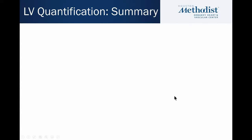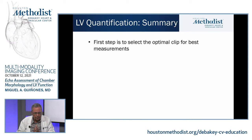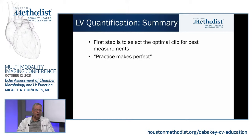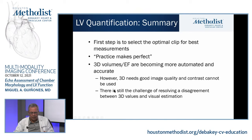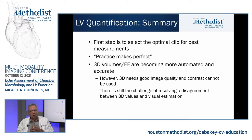In summary of quantification so far: the first step is to select the optimal clip for best measurements — this cannot be overemphasized. Practice makes perfect. 3D volumes and EF are becoming more automated and accurate and they're great. However, 3D needs good image quality and still doesn't work well with contrast. There is still the challenge of resolving disagreement between your visual estimate and 3D results. If the 3D values and your estimation are not relatively close, you need to do more work — you don't want to report a 3D value that may be totally erroneous.